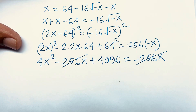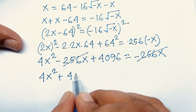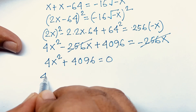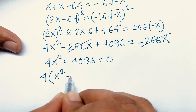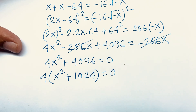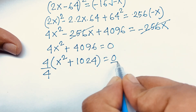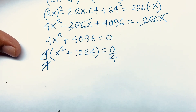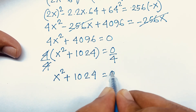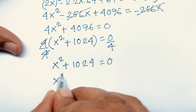After cancellation we find 4x² + 4096 = 0. Dividing both sides by 4 gives x² + 1024 = 0, which simplifies to x² = -1024.